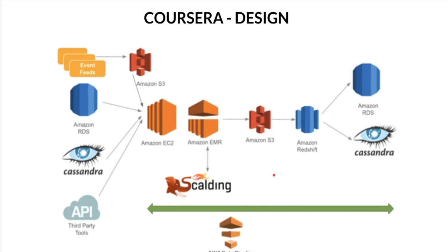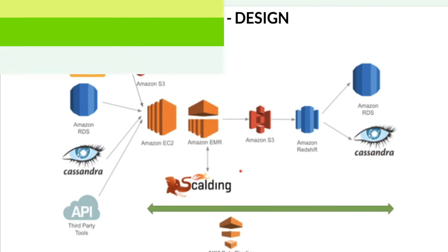At a very high level, I believe they are storing data at different data sources — for example Cassandra, RDS, and S3 bucket — and Amazon Redshift acts like an interface where we can query these data sources and stream them. I would highly recommend you to start reading more about what exactly Amazon Redshift, RDS, Cassandra, and Data Pipeline mean — it will help you learn more about these technologies.